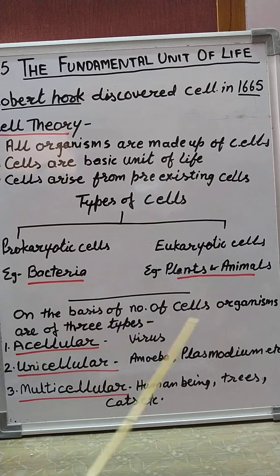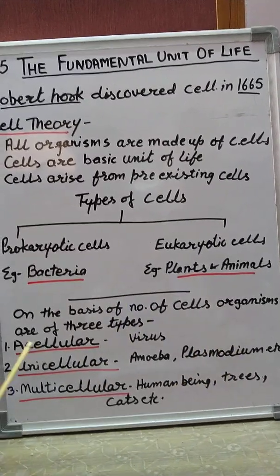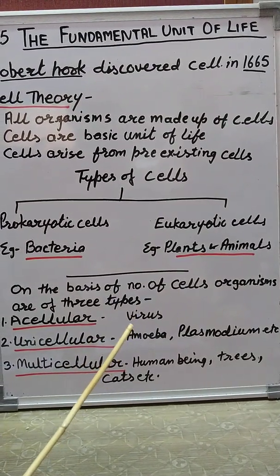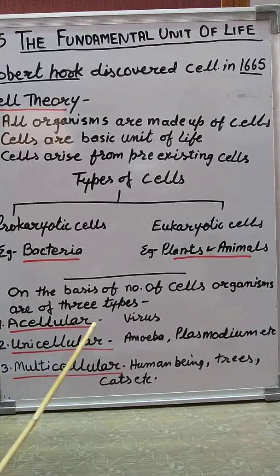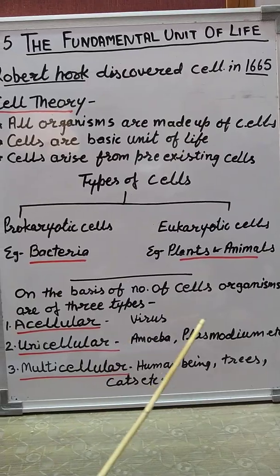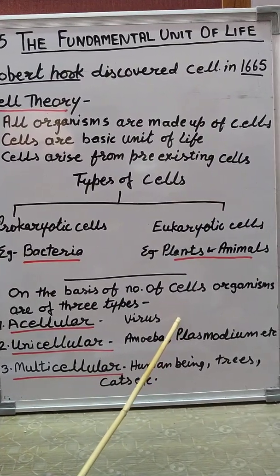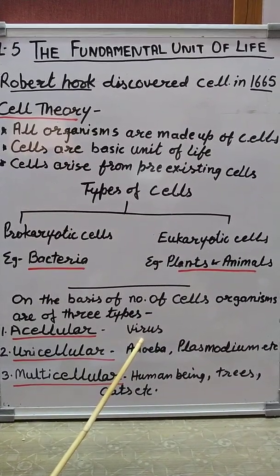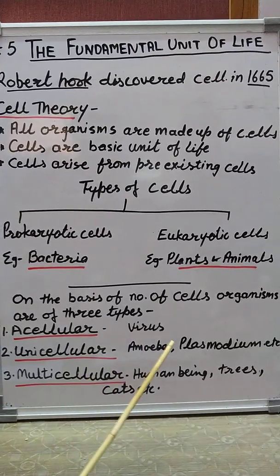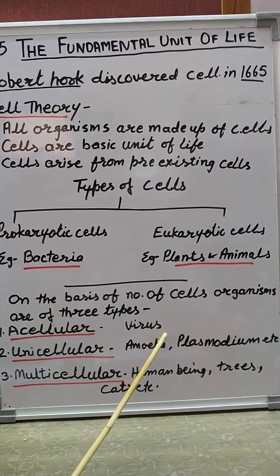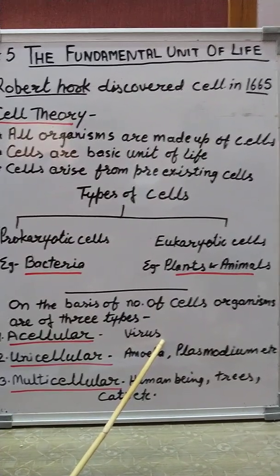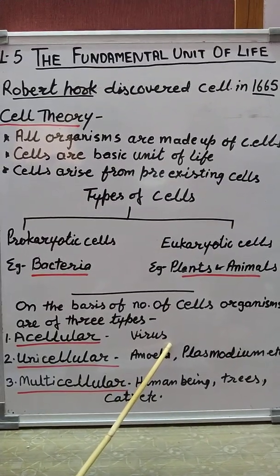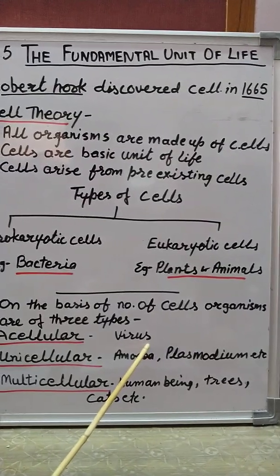On the basis of number of cells, organisms are of three types. First, acellular organisms, which do not have any cellular structure — the example is viruses. Viruses are the link between non-living and living: when not inside a living organism they act as non-living, and as soon as they enter a living cell they start using the energy of that cell.